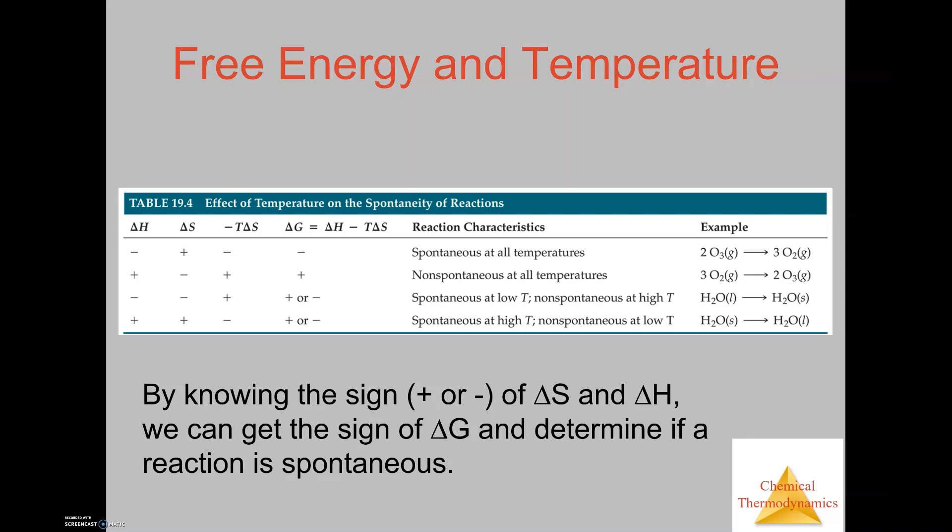To give you an example here, if Delta H is negative and Delta S is positive, the term T Delta S is going to be negative because the negative doesn't cancel out since the Delta S term is positive. So in this case, Delta G could be negative, so it's spontaneous at all temperatures.